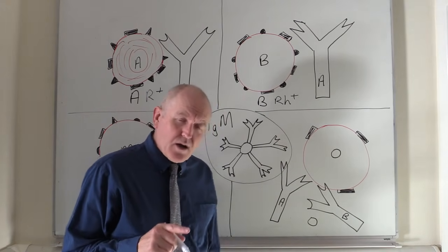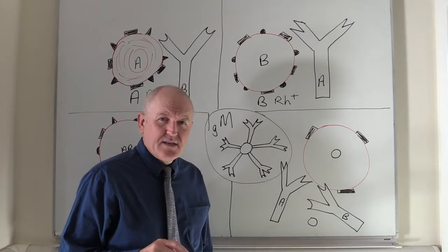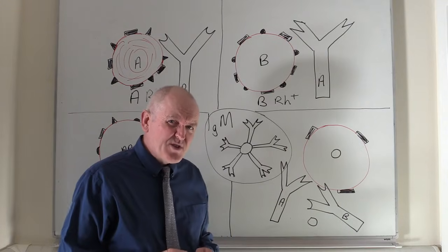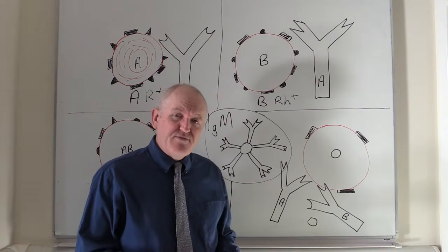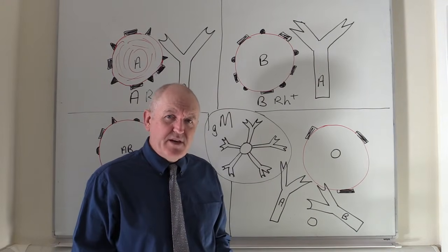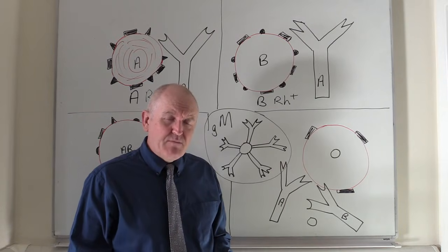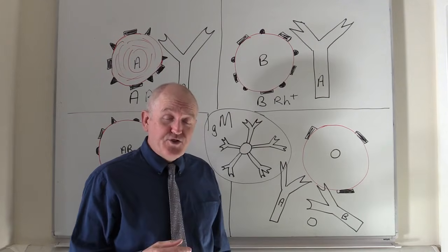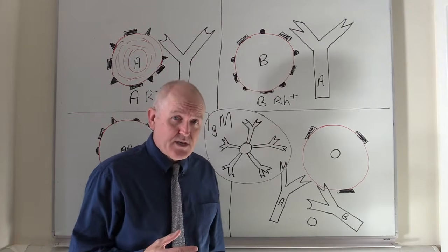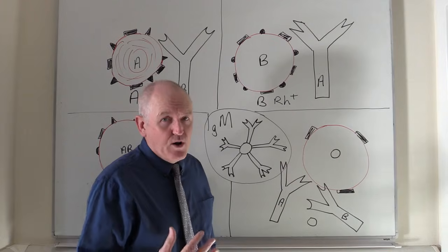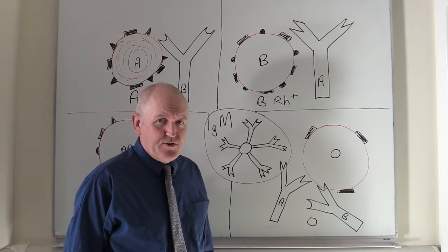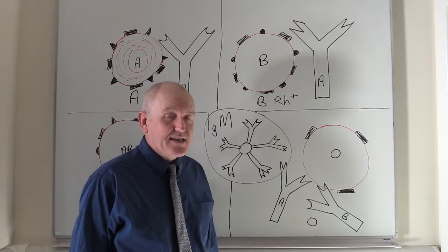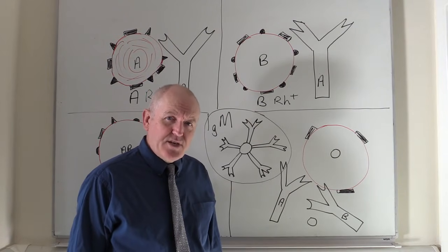Blood groups are quite a bit more complicated than this. In fact, the last time I read anything about it, there were 35 different types of blood groups which have been identified. But the ABO Rhesus system is the immunologically most significant to be taken into account for blood transfusion. Most transfusion laboratories will take into account more factors than just the ABO Rhesus factor.